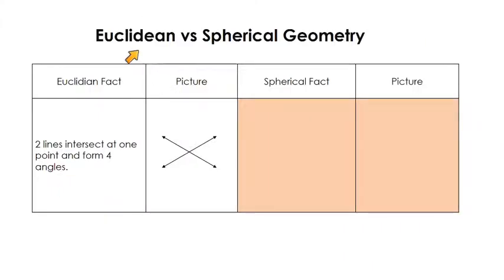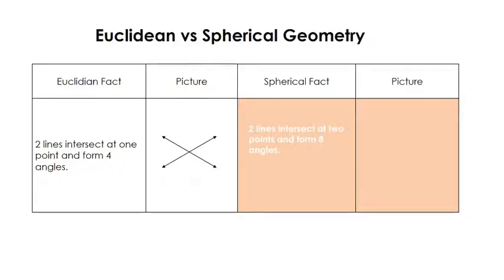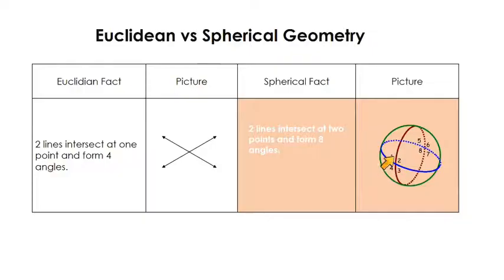Now let's look at some Euclidean facts and compare them to spherical geometry. In Euclidean geometry, two lines intersect at one point and form four angles. But if you have two lines in spherical geometry — that would be two great circles — they intersect and create four angles at one point, just like Euclidean lines. However, those great circles also intersect on the other side and create four more angles. So in spherical geometry, two lines intersect at two points and form eight angles.